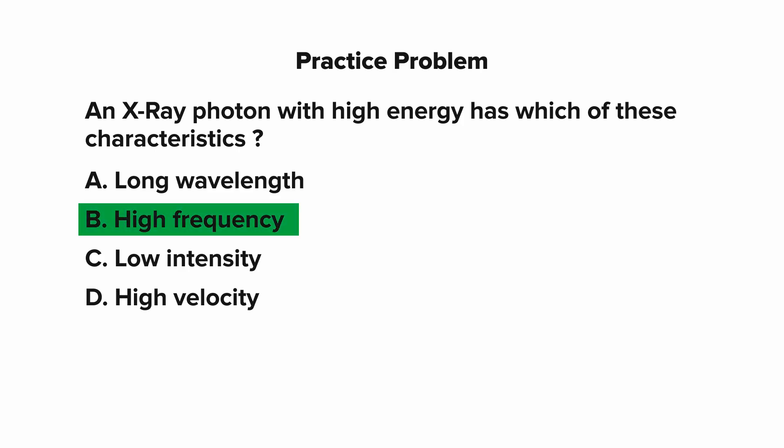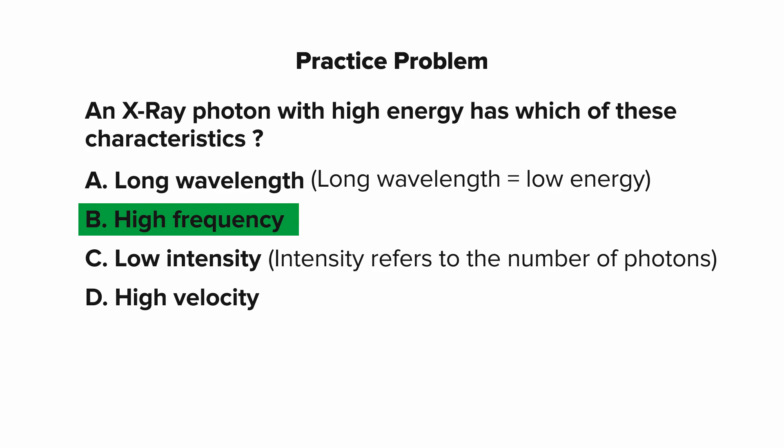The correct answer is B, high frequency. When frequency increases, this means there are more waves per second and shorter wavelength, which corresponds to a higher energy photon. A is not correct, because a long wavelength results in low energy. C is not correct, because intensity refers to the number of photons, not the energy. And finally, D is not correct, because the velocity of a photon is always the same. It's always the speed of light.